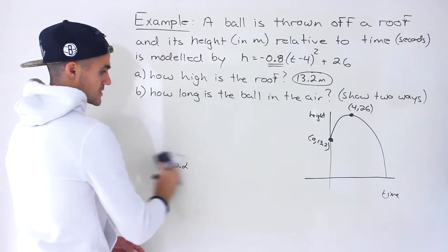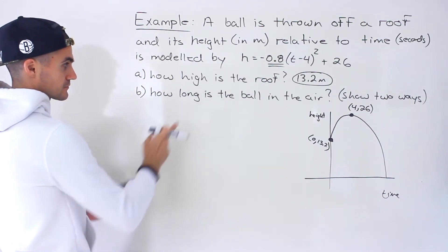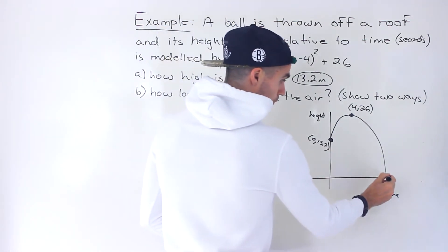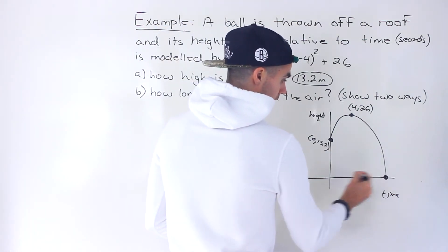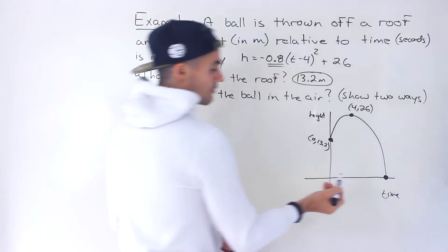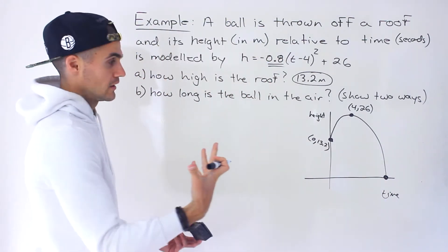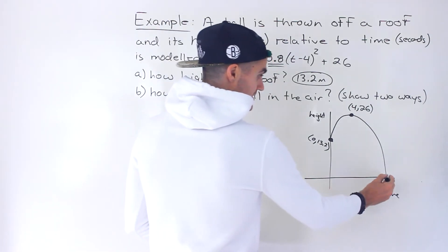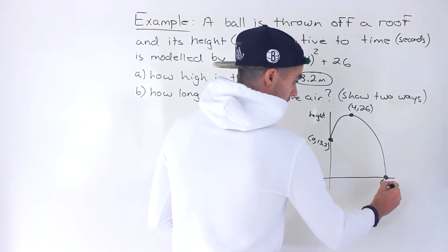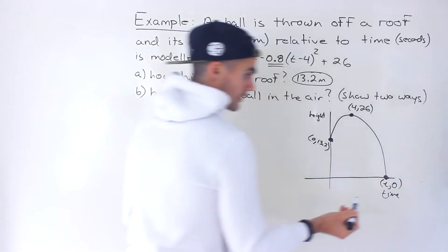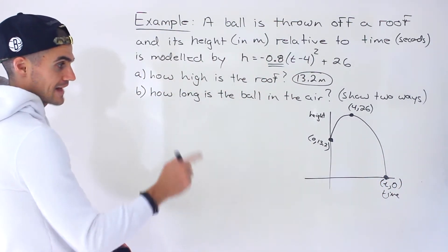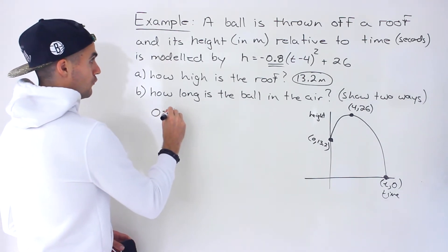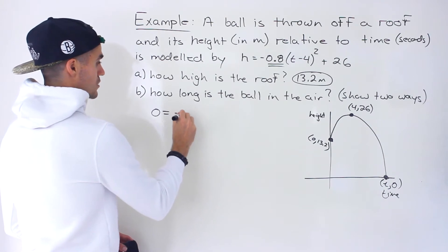Now part b, this is where the bulk of the work is going to be. How long is the ball in the air? Well we have to solve when is it going to hit the ground, right? That amount of time, that's how long the ball is in the air for. So to solve for this point, notice that the height is 0 at this point. So we're going to solve for some kind of t value when the height is 0. So we would plug in 0 for h and then solve for t.